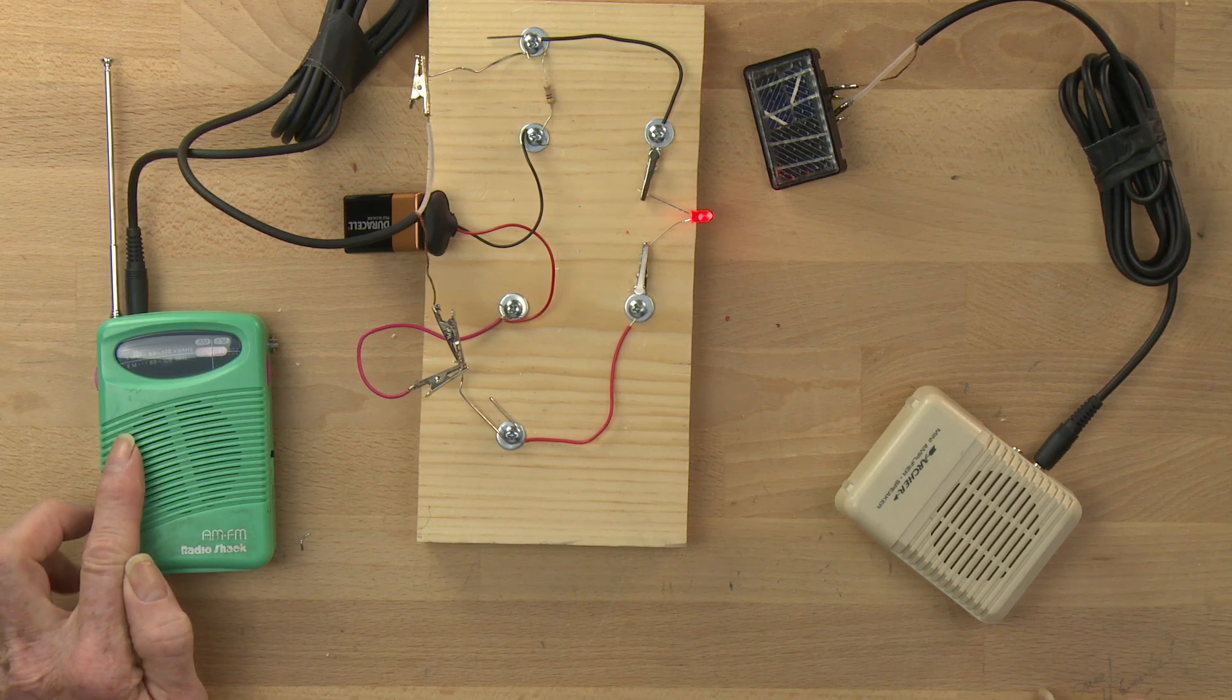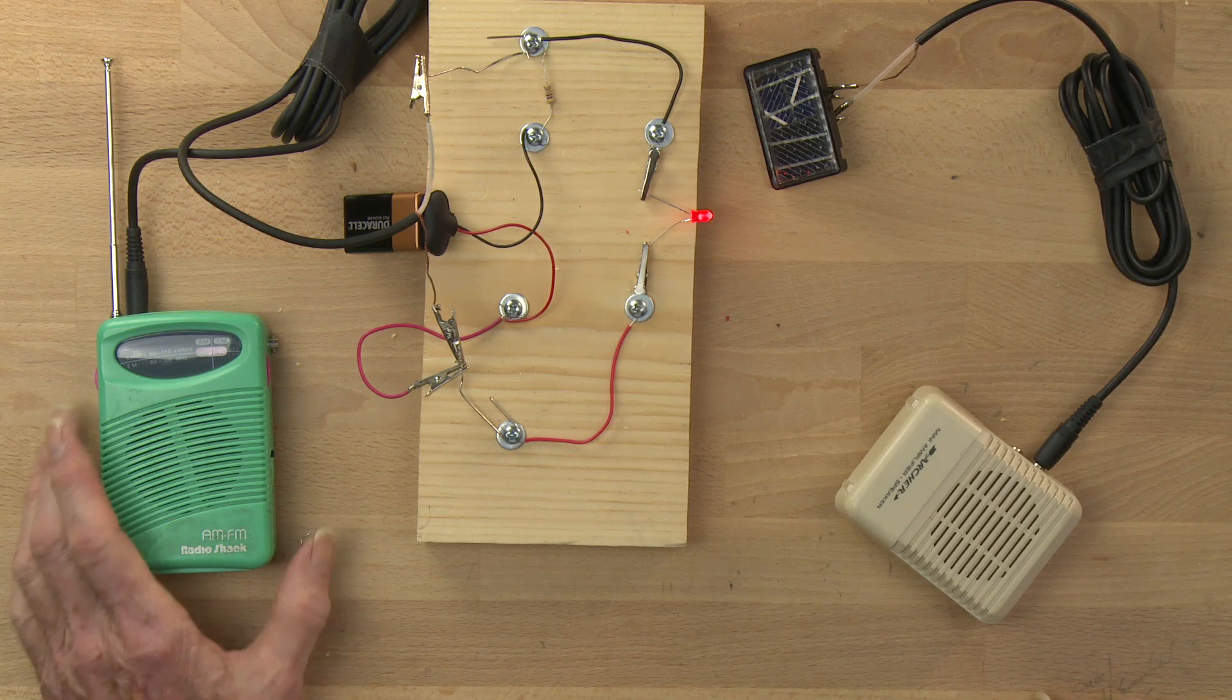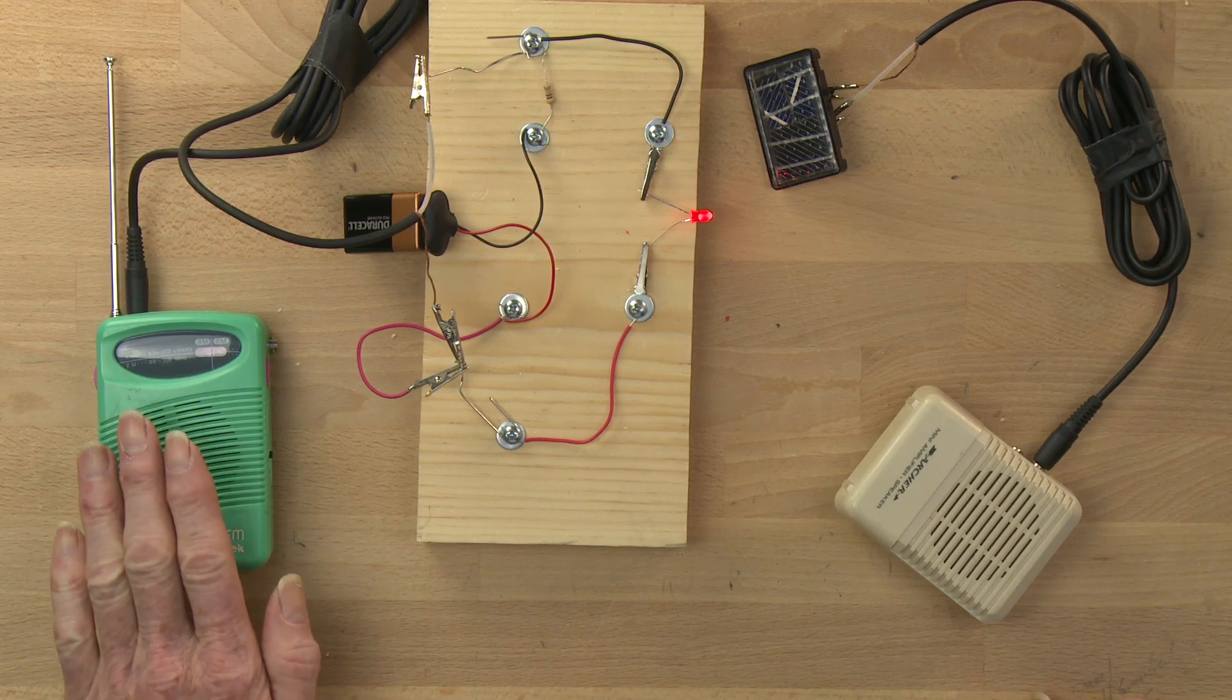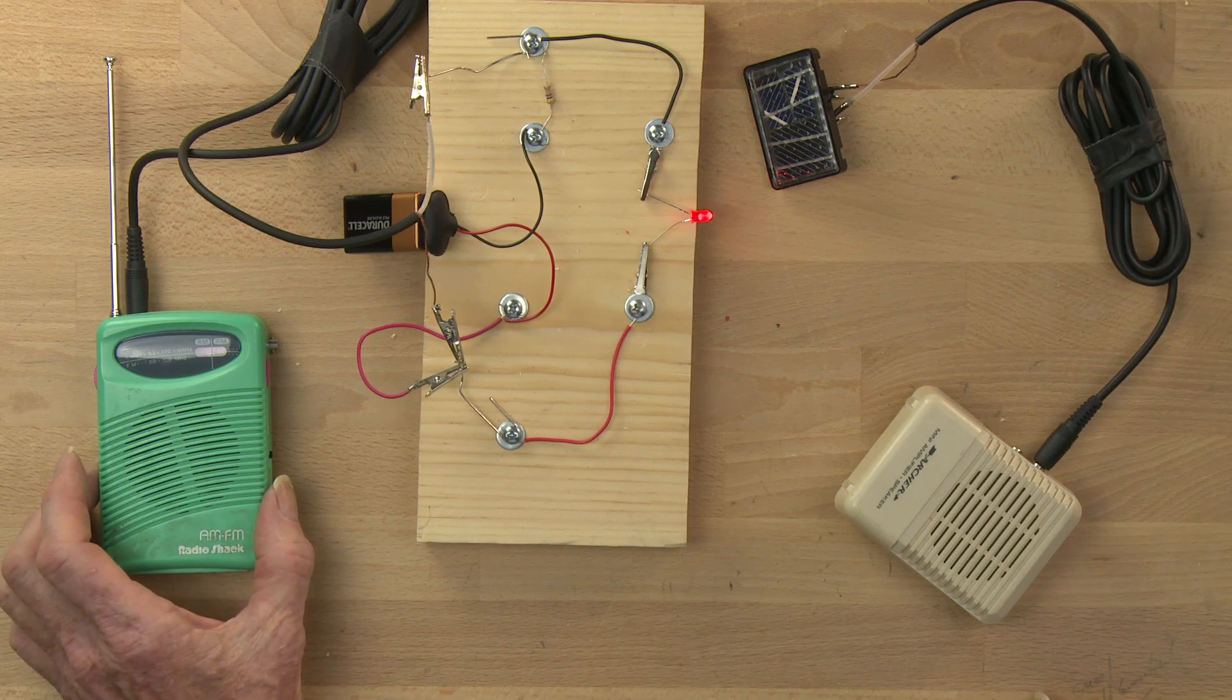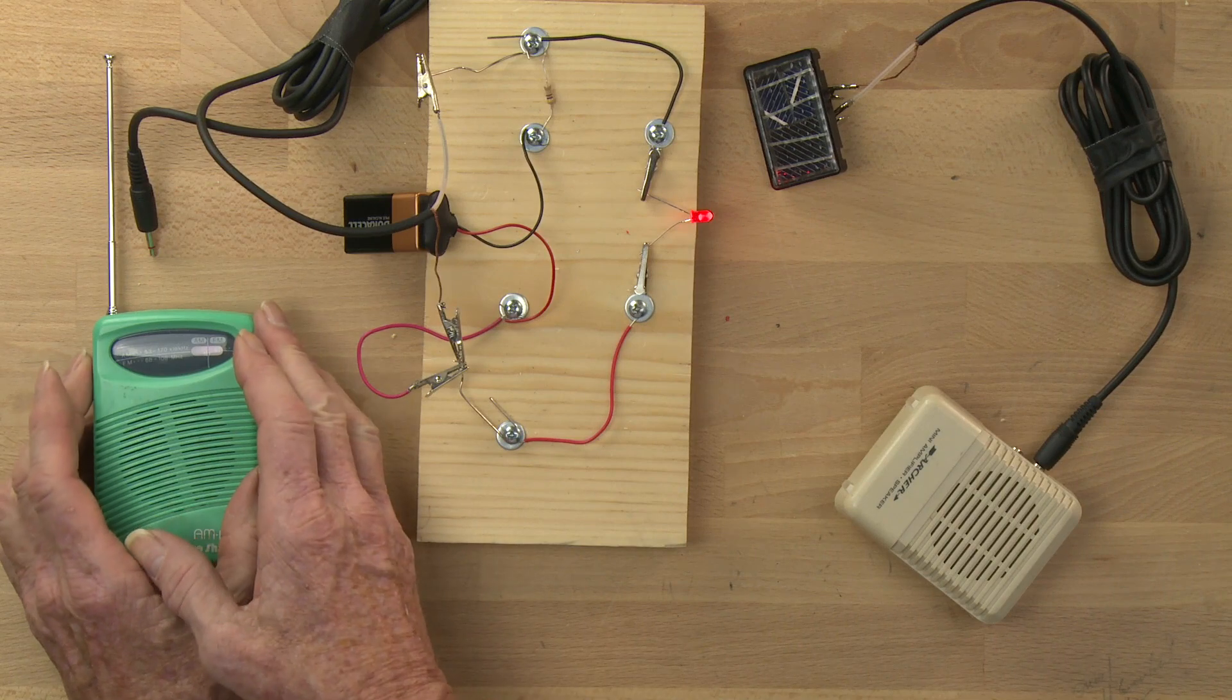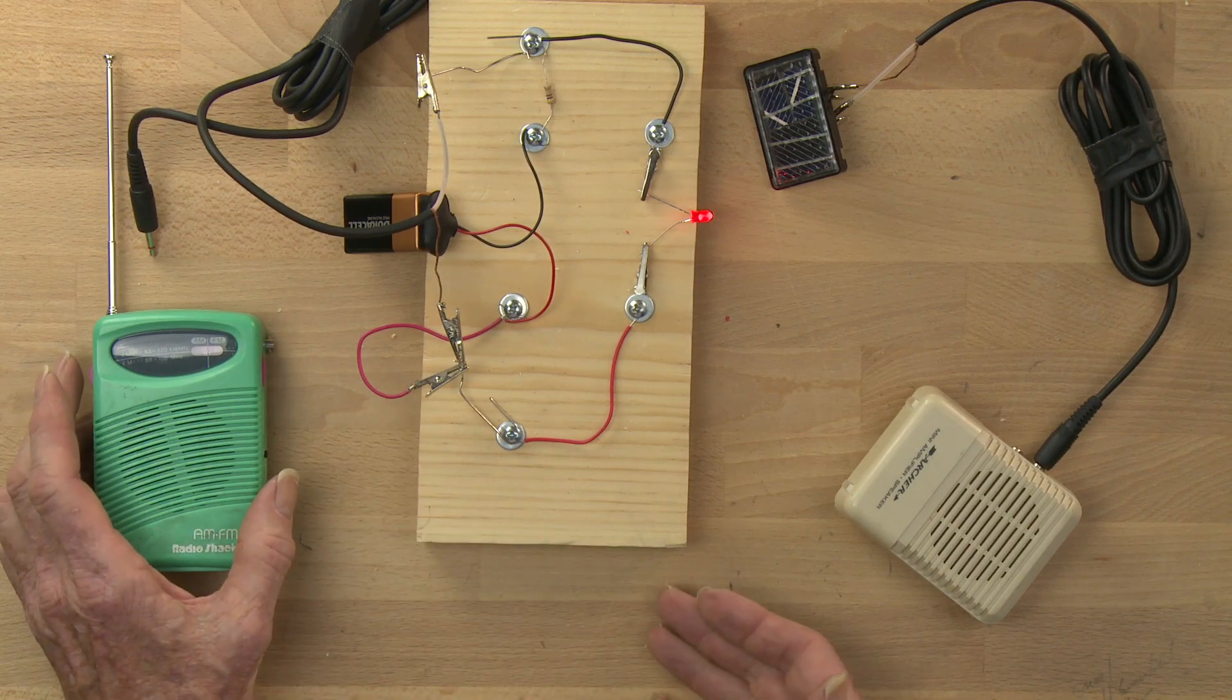And the radio converts those electromagnetic waves into an alternating current audio signal. And it uses that signal to push and pull on the speaker in this device. So if I turn it on, I get music.